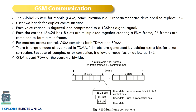In second generation, global system for mobile communication is the European standard which replaced 1G. So the replacement of 1G is 2G. In 2G we are going to use GSM, which is developed in Europe, and it also uses two bands — one for uplink from the mobile station to the base station, another for downlink from base station to the mobile station. This is called duplex communication.